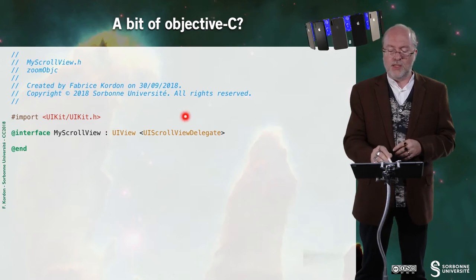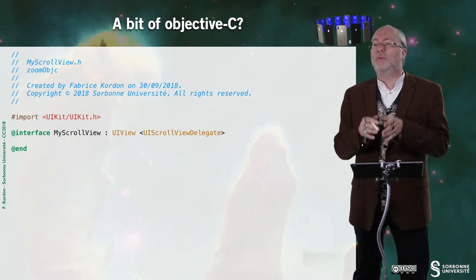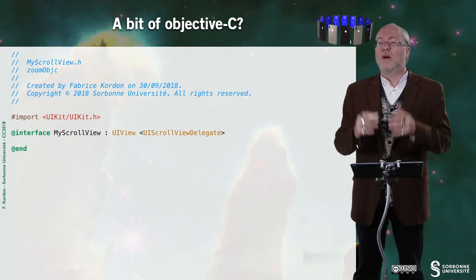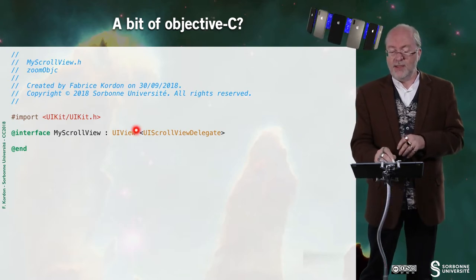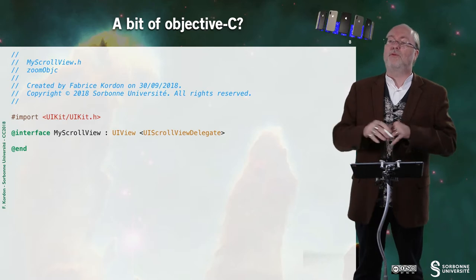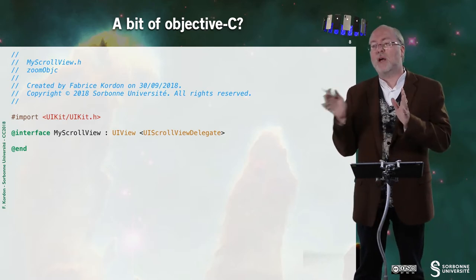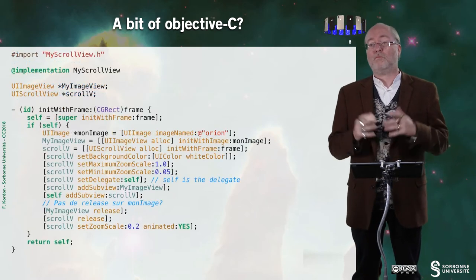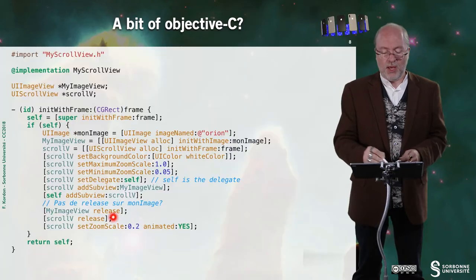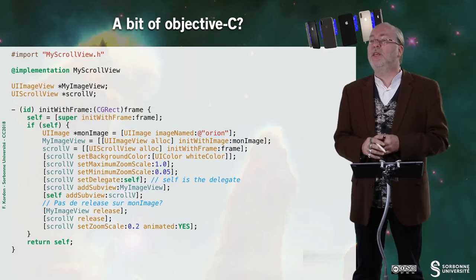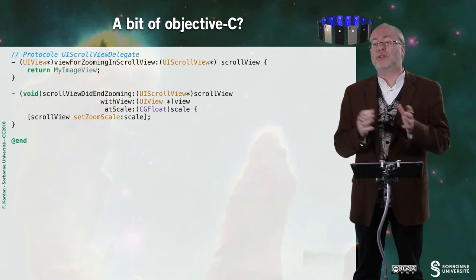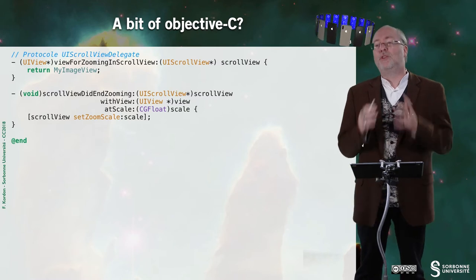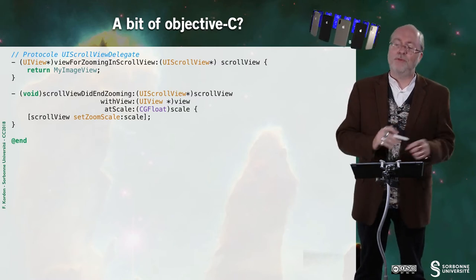Just a bit of Objective-C quickly. This is important because it shows how you specify that you answer to a protocol in the .h interface file. MyScrollView inherits from UIView and answers to this protocol — if you have several protocols, you separate them with commas. The implementation is exactly the same, and here I implement the two methods of the protocol in Objective-C — nothing changes compared to the Swift version.